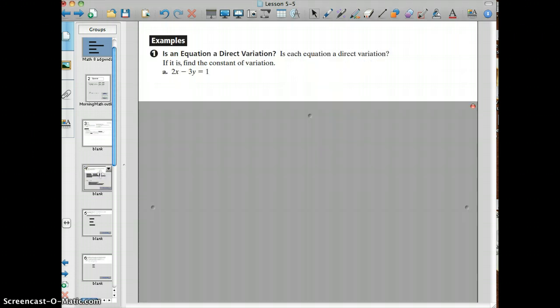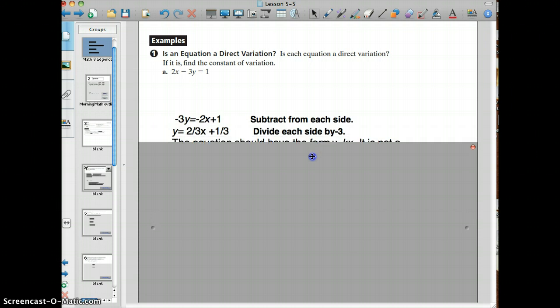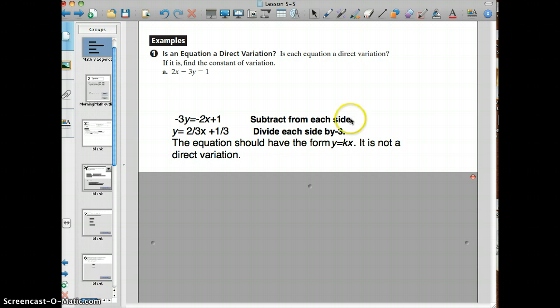Let's look at the first example here. You want to ask yourself, is this equation a direct variation? If it is, find the constant of its variation. So we have 2x minus 3y equals 1. You want to rearrange your equation so it's in y equals format, so that we can see if it's in the form y equals k times x. We're going to start by subtracting 2x from each side, and then we divide each side by negative 3, and that's going to leave us with y equals 2/3 x plus 1/3. In this case, the equation should have the form y equals k times x. It is not a direct variation because we can't find that constant there.